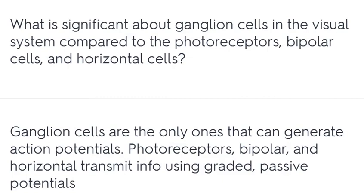What is significant about ganglion cells in the visual system compared to photoreceptors, bipolar cells, and horizontal cells? Ganglion cells are the only ones that can generate action potentials. Photoreceptors, bipolar cells, and horizontal cells transmit information using graded passive potentials.